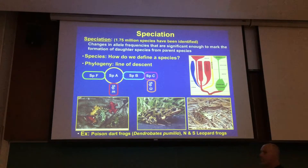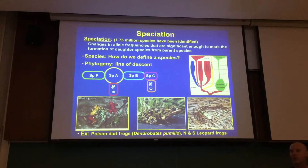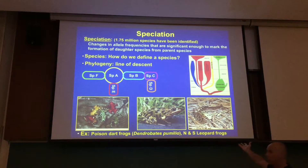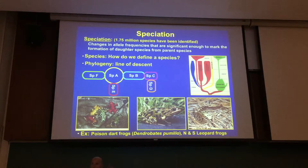Look at these things — they look almost identical. By intuition, you'd say same species. But they're completely different species that don't breed with each other. These completely interbreed; these refuse to breed with each other and sing a different song. The northern and southern leopard frog.